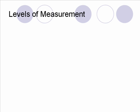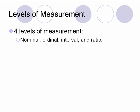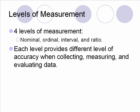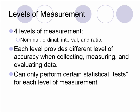First thing we need to know about numbers is there are different levels of numbers — that's measurement. We have four levels of measurement. The four are nominal, ordinal, interval, and ratio. This is not covered in the textbook, but it's kind of important, so I want to make sure we get this clear. Each level provides a different level of accuracy when collecting, measuring, and evaluating the data. We can only perform certain statistical tests for each level of measurement. A statistical test is the way that we determine if our hypothesis is correct or not.